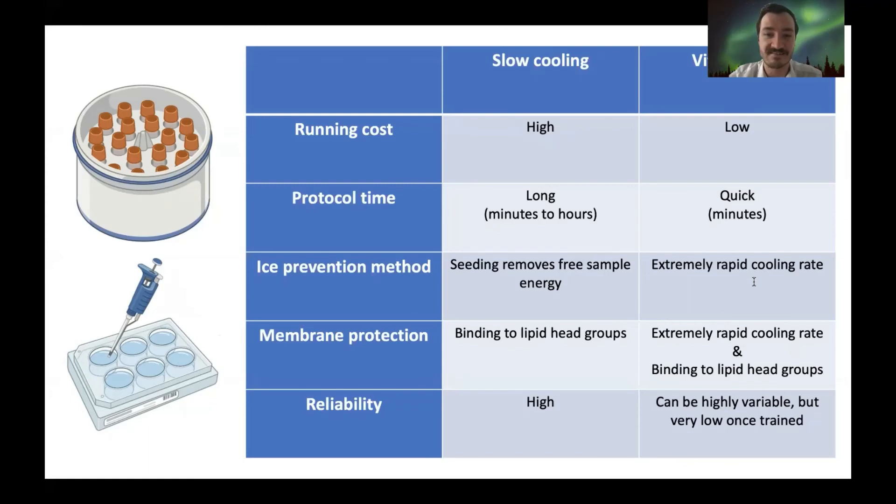Lastly, slow cooling is generally very consistent as it's largely an automated process. While vitrification has the potential to be extremely variable between zero and 100% success rate, once you're suitably trained and have enough experience, this variability dramatically reduces and success rates generally sit around 90 to 100%, depending on the cell type of course.